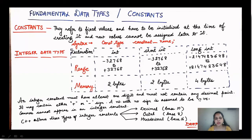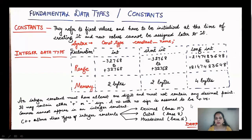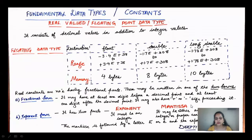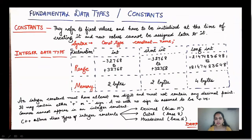C++ allows three types of integer constants: decimal (base 10), octal (base 8), and hexadecimal (base 16). You must be familiar with all these number systems.